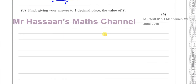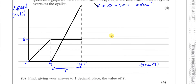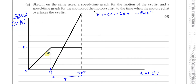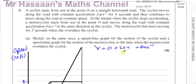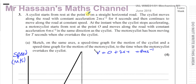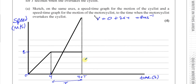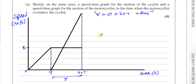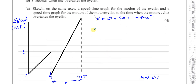For part B, we need to find the value of T to one decimal place. The key connection between the two graphs is distance: both the cyclist and motorcyclist started from point O, and at time four plus T they are at the same distance from O — because the motorcyclist has just caught up. So the distance traveled by both is equal, which means the area under each speed-time graph must be the same.